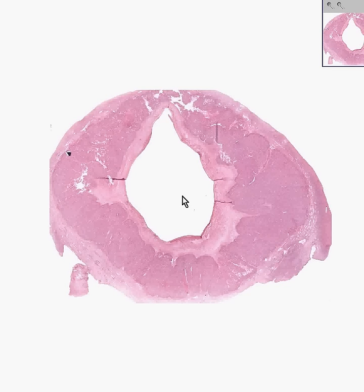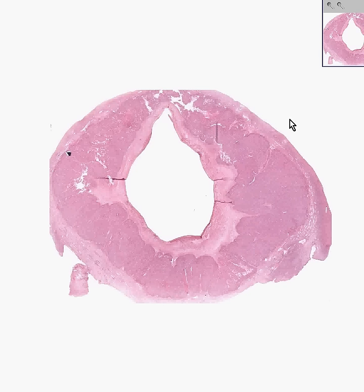In the previous slide of ovary, we described all the various stages of follicular development up until the final pre-ovulatory follicle called the Graafian follicle. The Graafian follicle was loaded with granulosa cells, which secrete estrogen under the influence of FSH and LH from the pituitary.